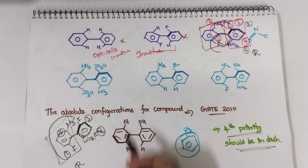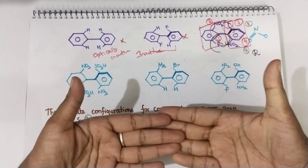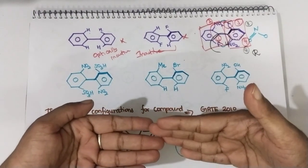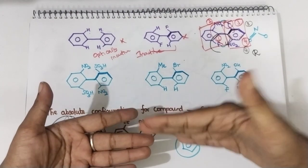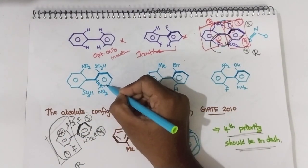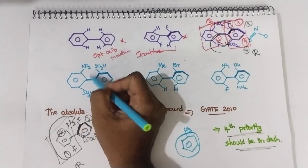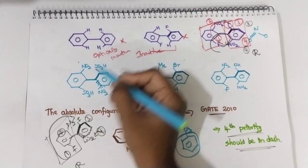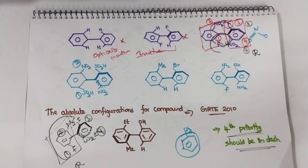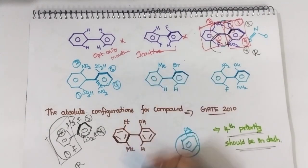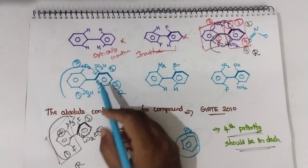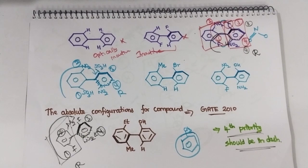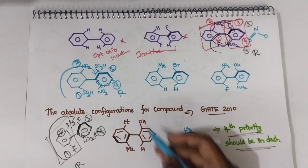Similarly, for this group: SO3H is bulkier, NO2 is also bulkier — definitely there will be steric hindrance and the biphenyl system will undergo 90 degree rotation. Now SO3H and NO2 are present on the plane; one SO3H is above the plane and NO2 is below the plane. Give priorities based on atomic number: sulfur is 1, nitrogen is 2, then 3 and 4. Rotate 1, 2, 3 — it is R configuration. The 4th priority group is in the dashed position, so no need to invert — simply it is R configuration.